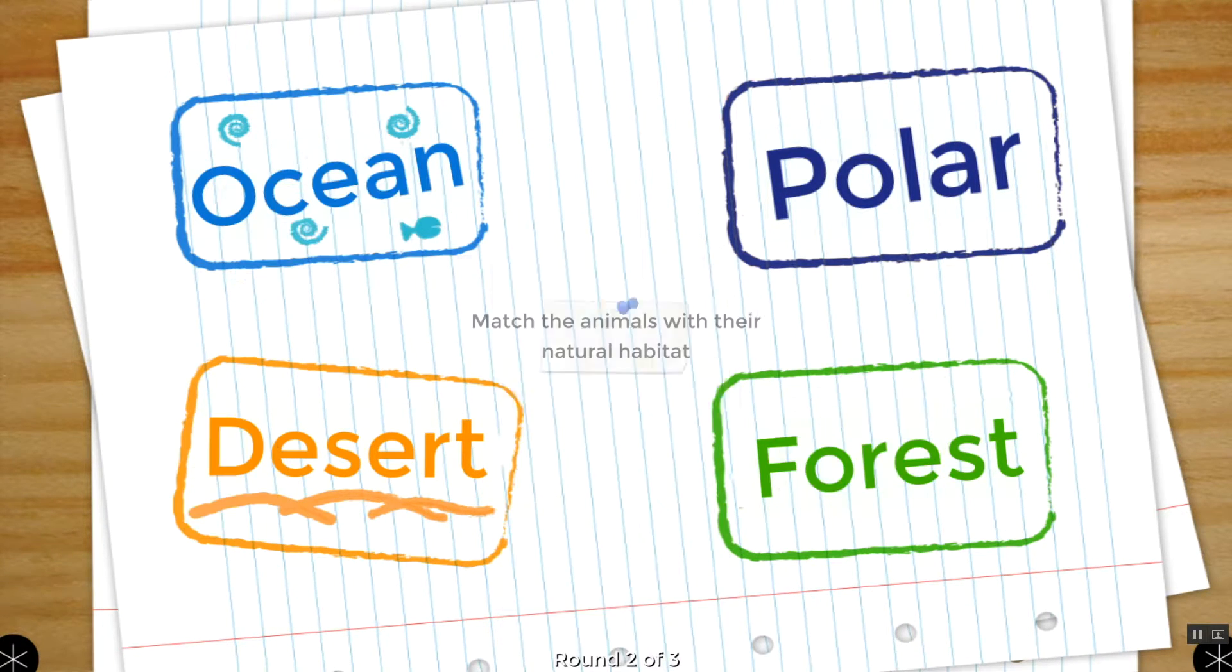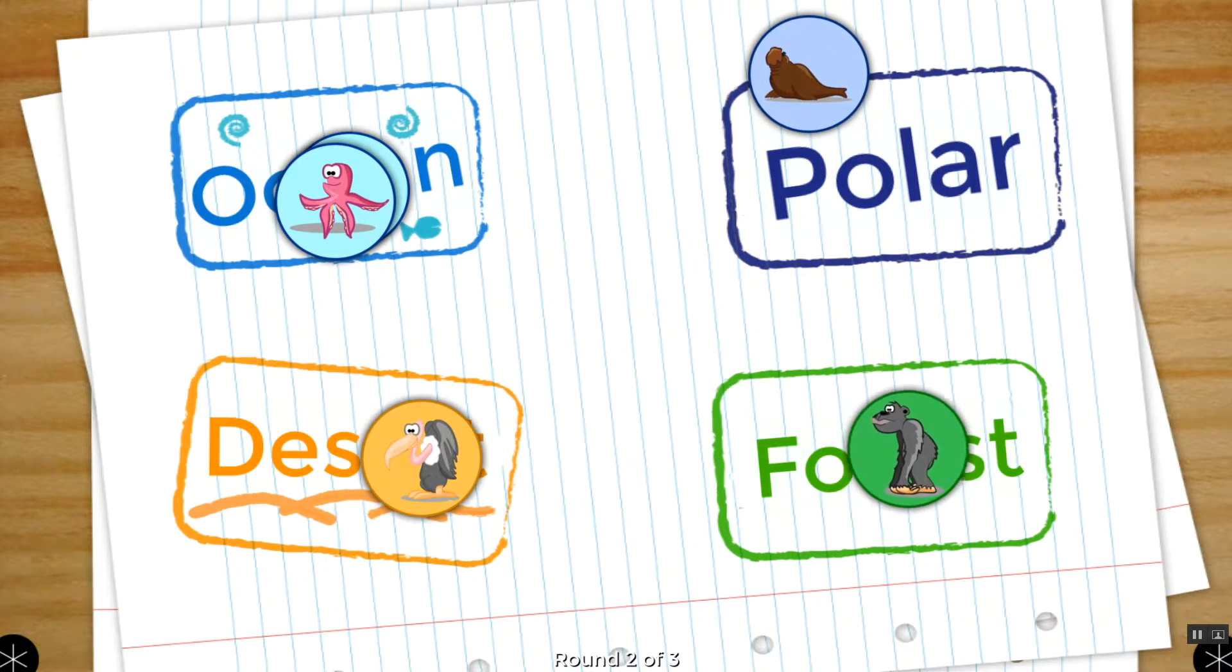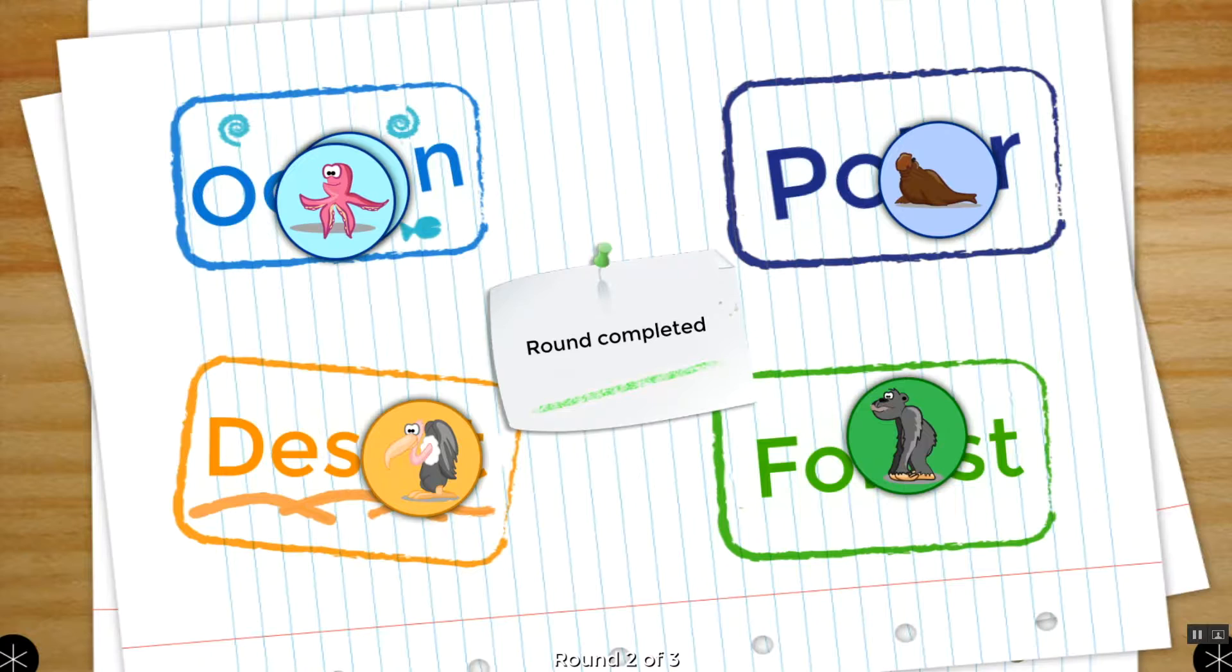After the items are placed, incorrect ones will give off a flashing red glow so students can self-correct. After each round, positive feedback is provided.